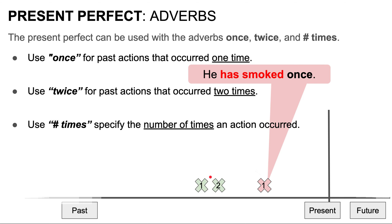Let's practice. I'm going to give you some 10-second questions. Try to fill in the blank with the correct adverb. Which adverb fits in the blank? He hasn't learned to drive. — He hasn't learned to drive yet. We use yet for actions that did not occur but will occur later. And yet always goes at the end. Next sentence: he has swum in his life — he doesn't know how to swim. He has never swum in his life. We use never for actions that did not occur.